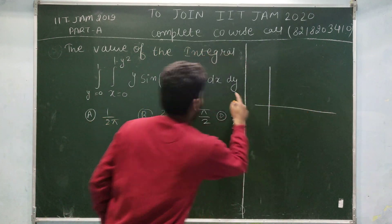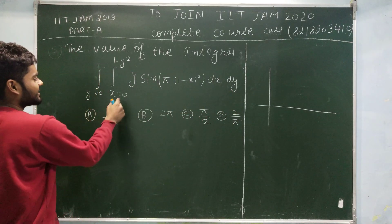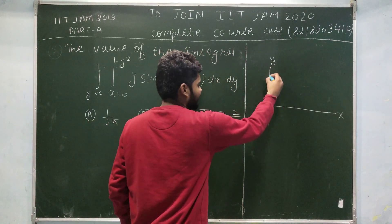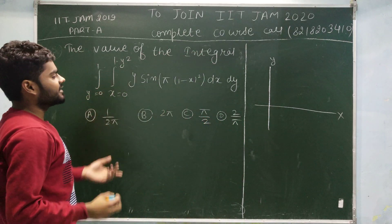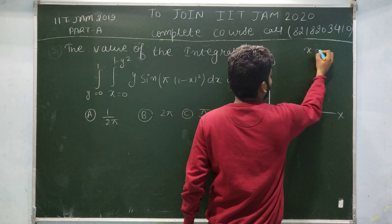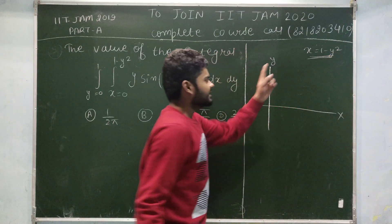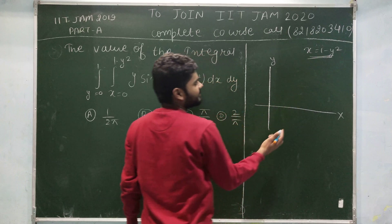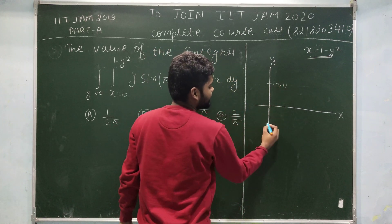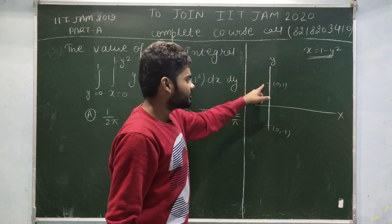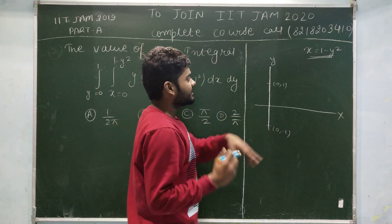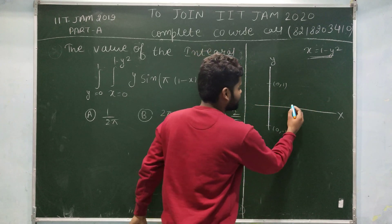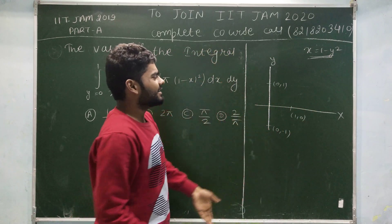First of all, you have to draw your region. y is varying from 0 to 1 and x is varying from 0 to 1 minus y squared. So x equals 0 means the y-axis. x equals 1 minus y squared is the equation of a parabola. When x equals 0, you can easily see y equals plus or minus 1, so the parabola passes through (0,1) and (0,-1). If you put x equals 1, then y equals 0, giving the point (1,0).